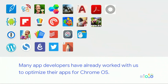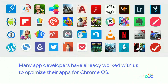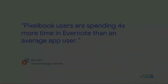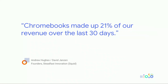Adobe, Roblox, Sony, EA, and many more have already included Chromebook optimizations in their latest updates on the Play Store, and that's opening up different kinds of usage and revenue. May Allen, PM from Evernote, told us Pixelbook users are spending four times more time in Evernote than an average app user. And Andrew and David, founders from Steadfast Innovation, who make the Squid app, told us that Chromebooks have made up 21% of their revenue over the last 30 days.